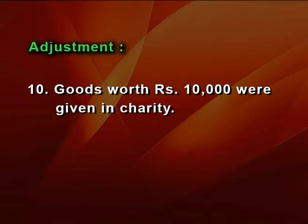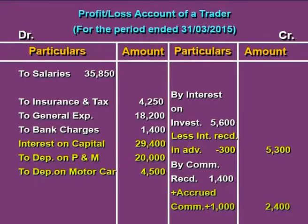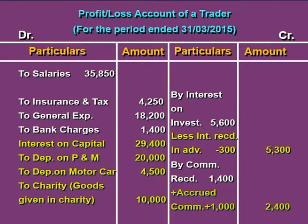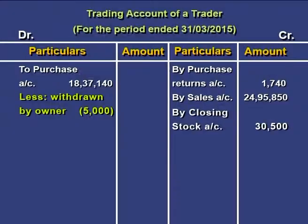A similar adjustment: goods worth Rs 10,000 were given in charity. Charity is an indirect loss for the business, so Rs 10,000 is reported on the debit side of the profit or loss account as a loss. The second effect: goods of Rs 10,000 are deducted from the value of total purchases in the trading account.